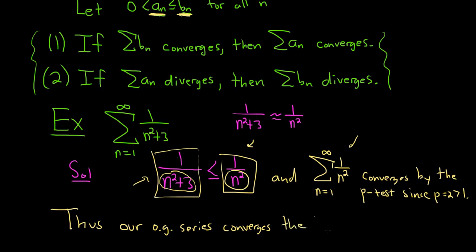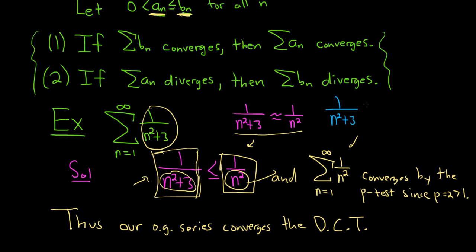Let me go over that one more time carefully. It's important that everything is justified 100%. It's not enough to just say 'converges, DCT, p-test' — it has to be a logical progression of coherent and correct thoughts. You look at the problem, see the 3 doesn't matter, recognize it's like a p-series, so it should converge. Because you're showing convergence, you put a less than sign, drop the 3 since n²+3 > n², then explain why the sum of 1/n² converges by the p-test. Therefore, the original series converges by the DCT.